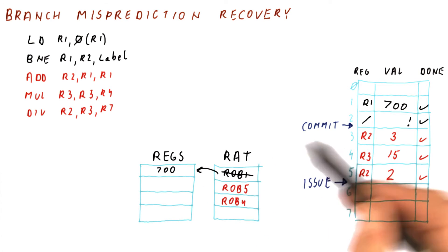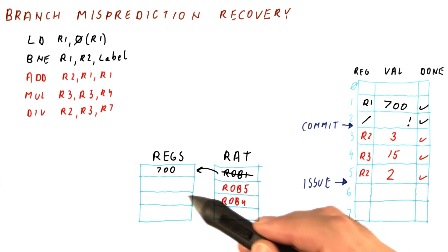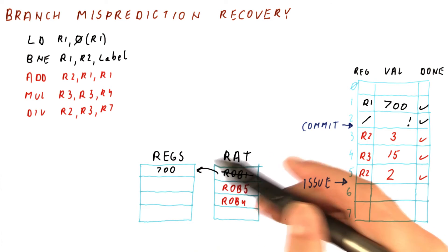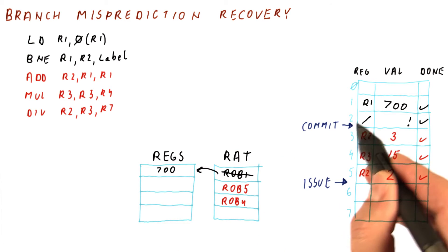which means that their updates have been reflected in the registers. And none of the instructions after the branch have updated the registers. So the registers contain exactly the correct value at the point of the branch.